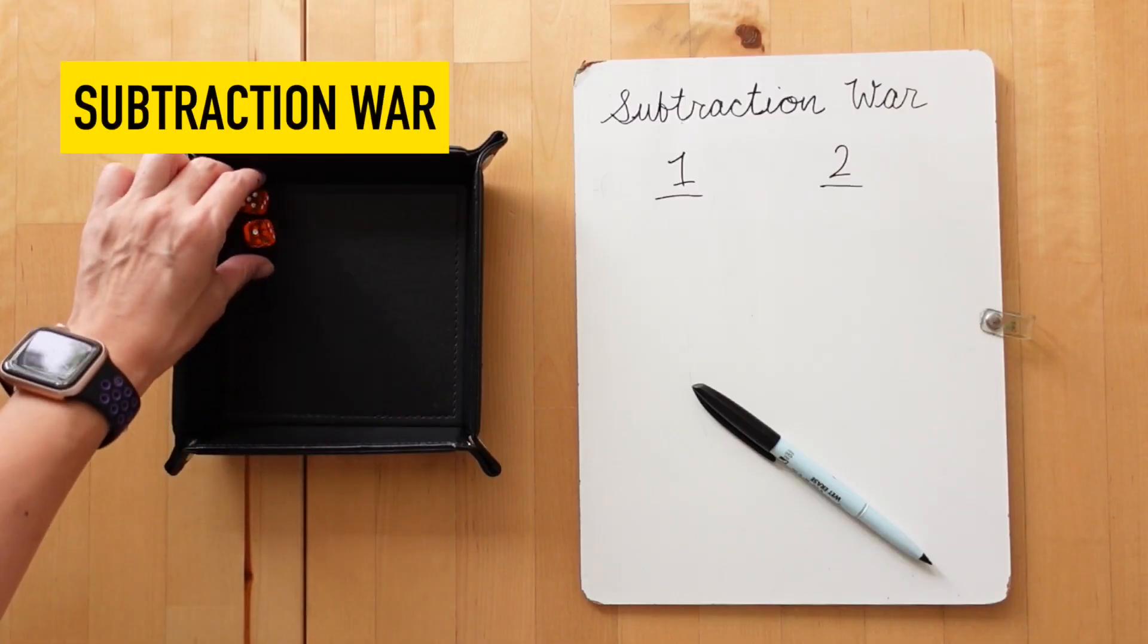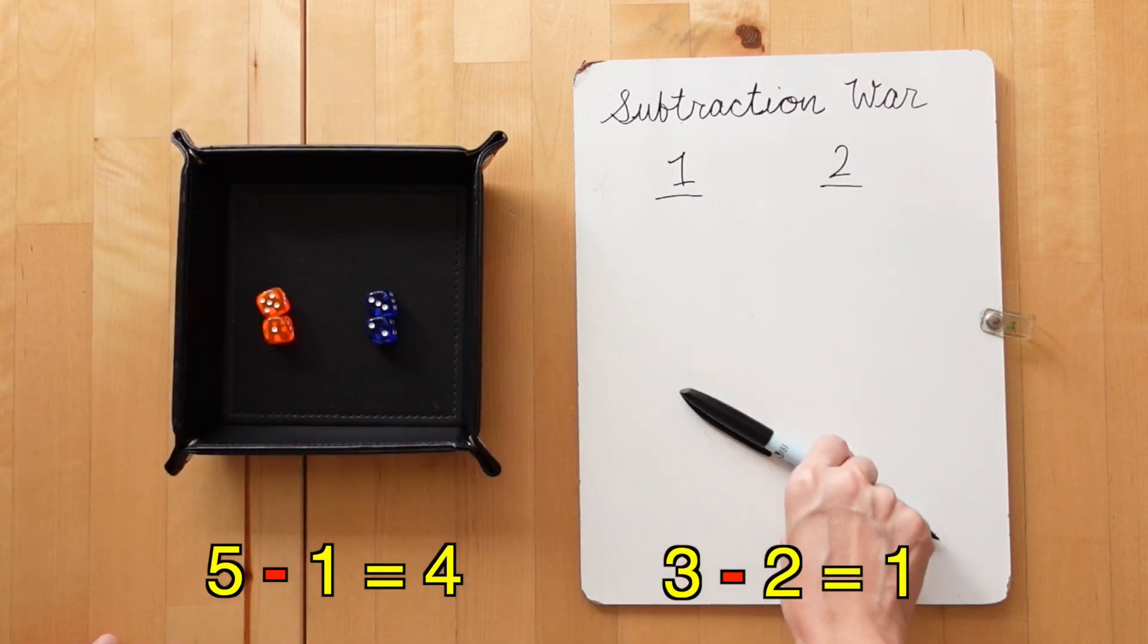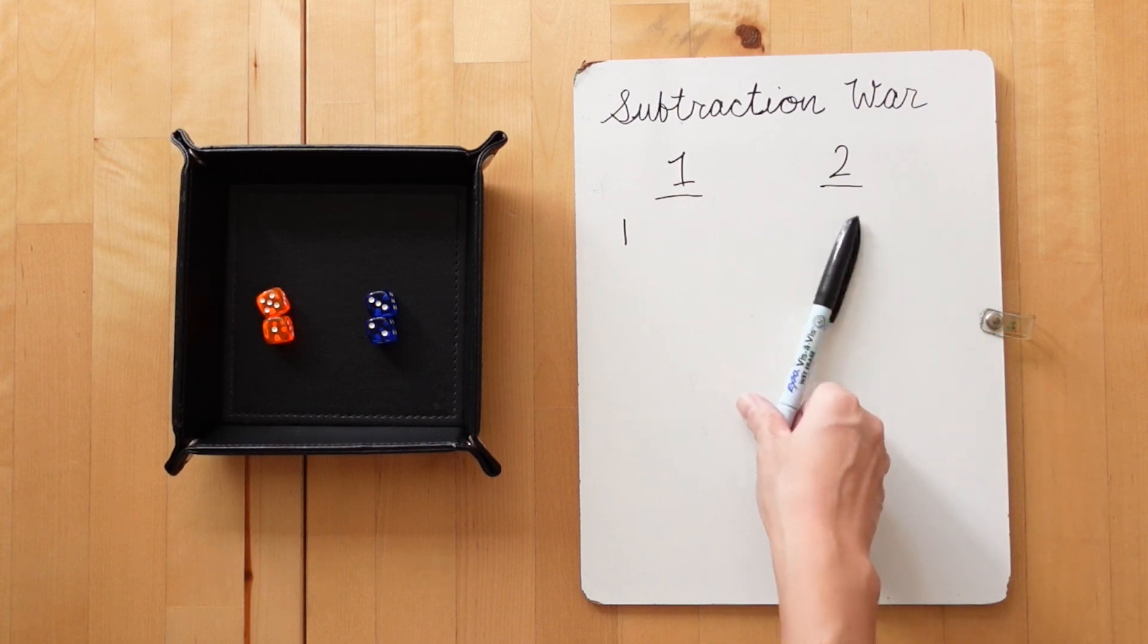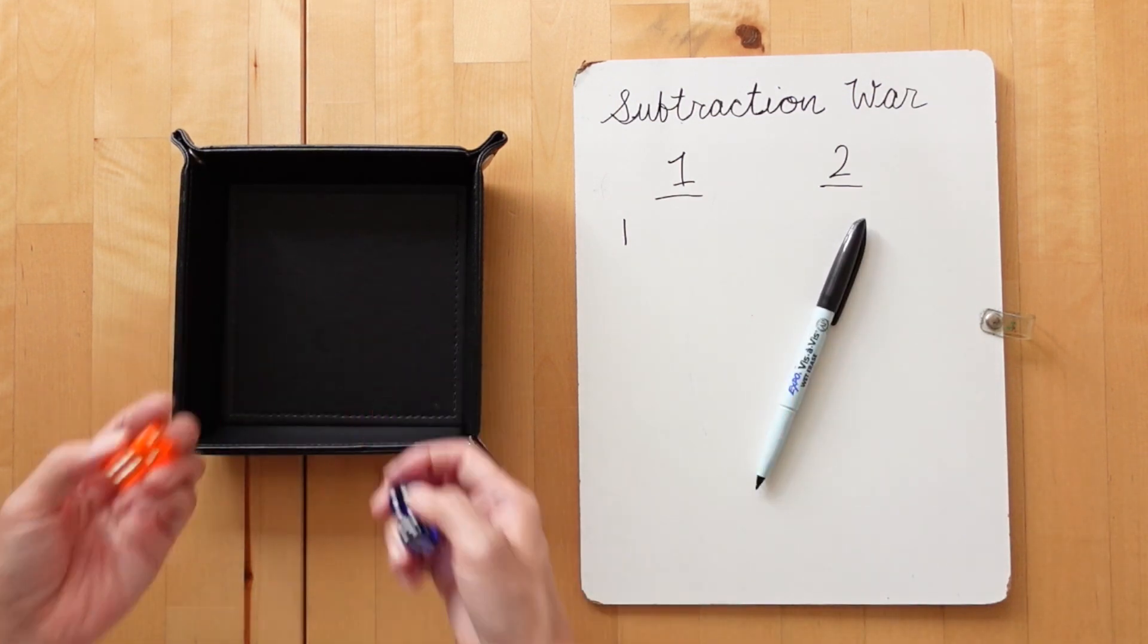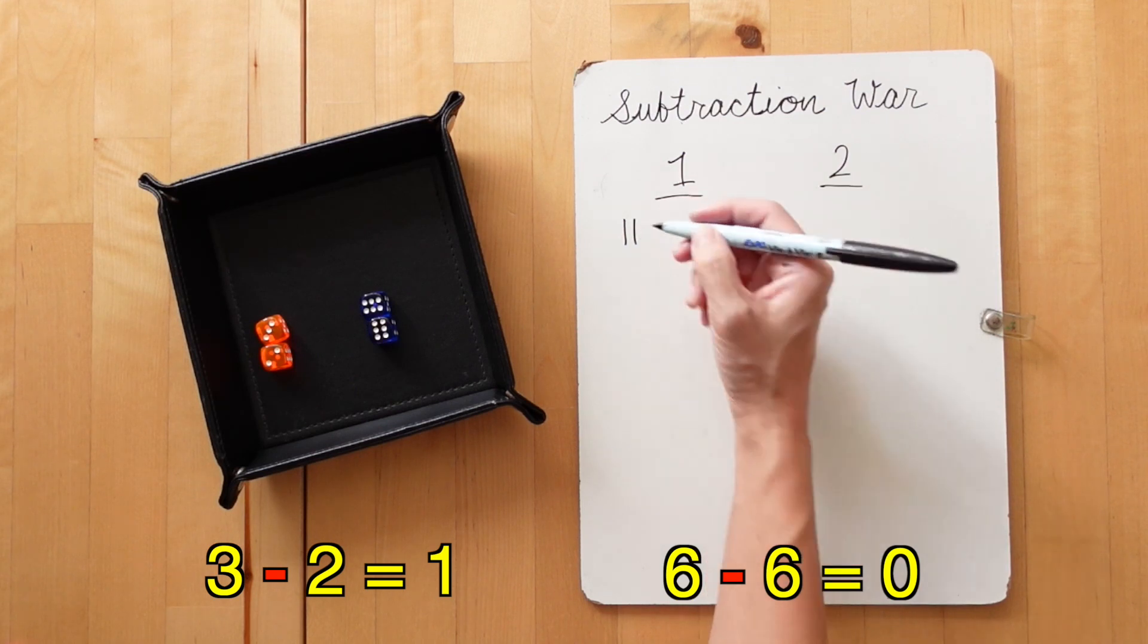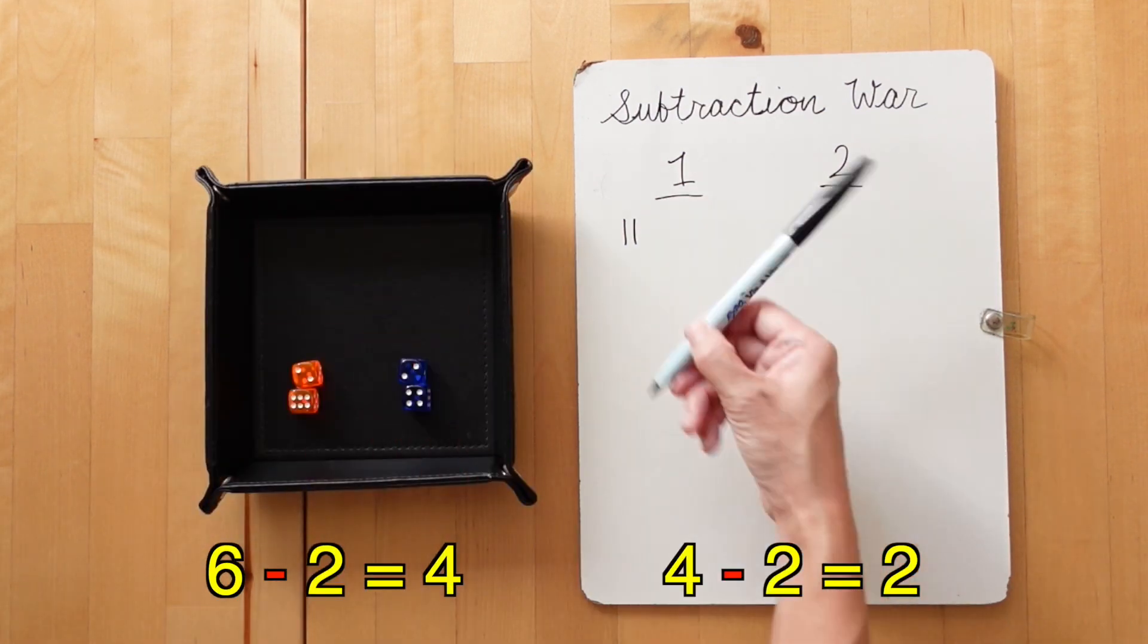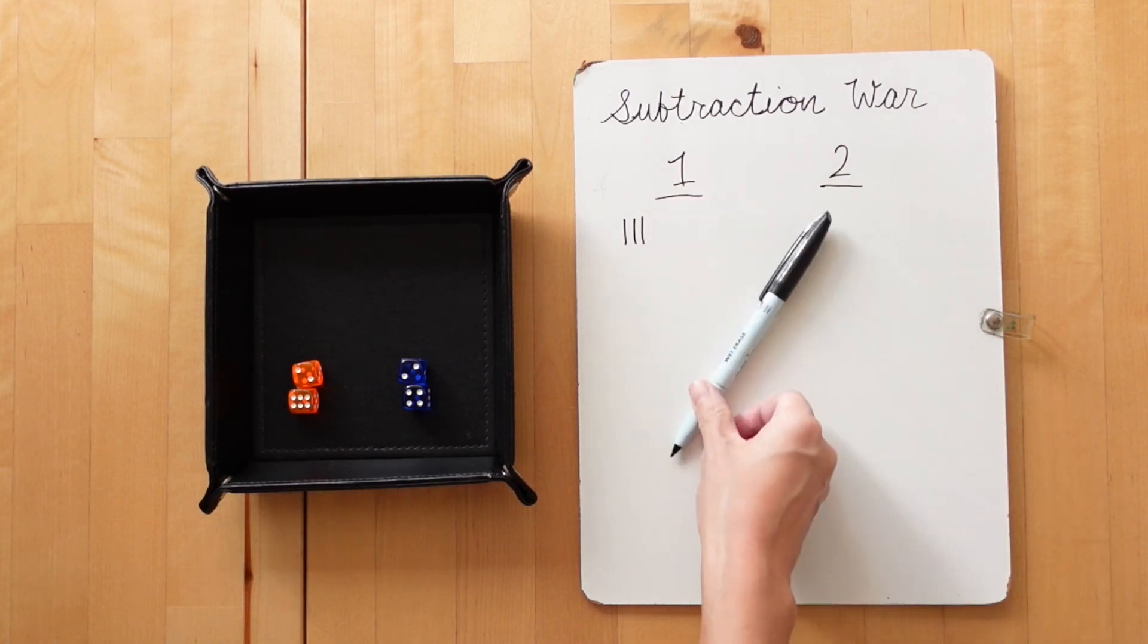Not too different to the first Addition War is Subtraction War. In this case, with the same two dice, the larger number forms the subtrahend and the smaller number forms the minuend. You can determine pre-game if the larger or smaller number at the end of the subtraction wins the round.